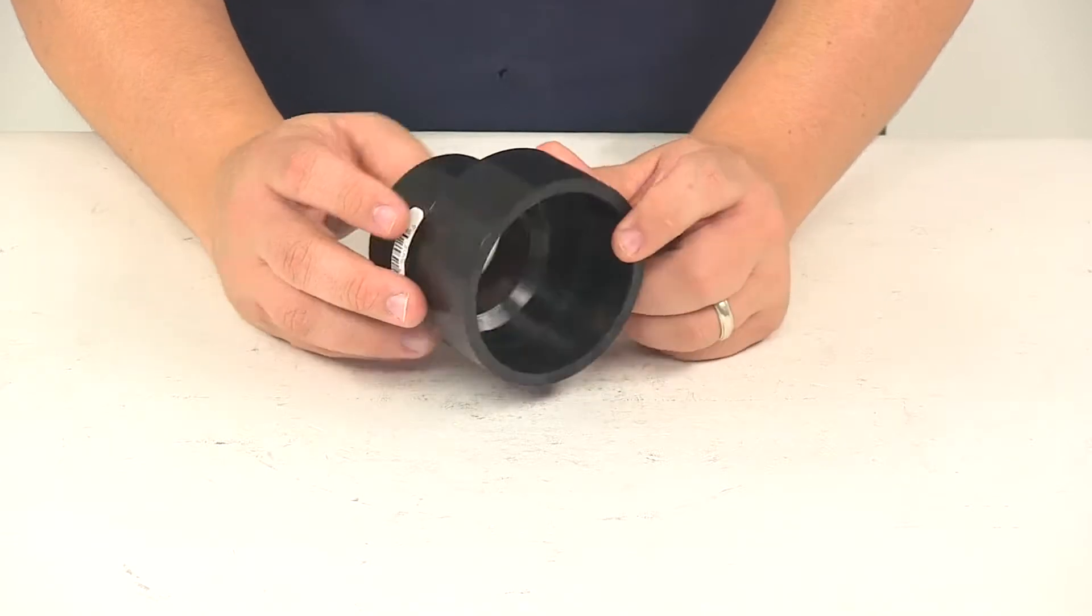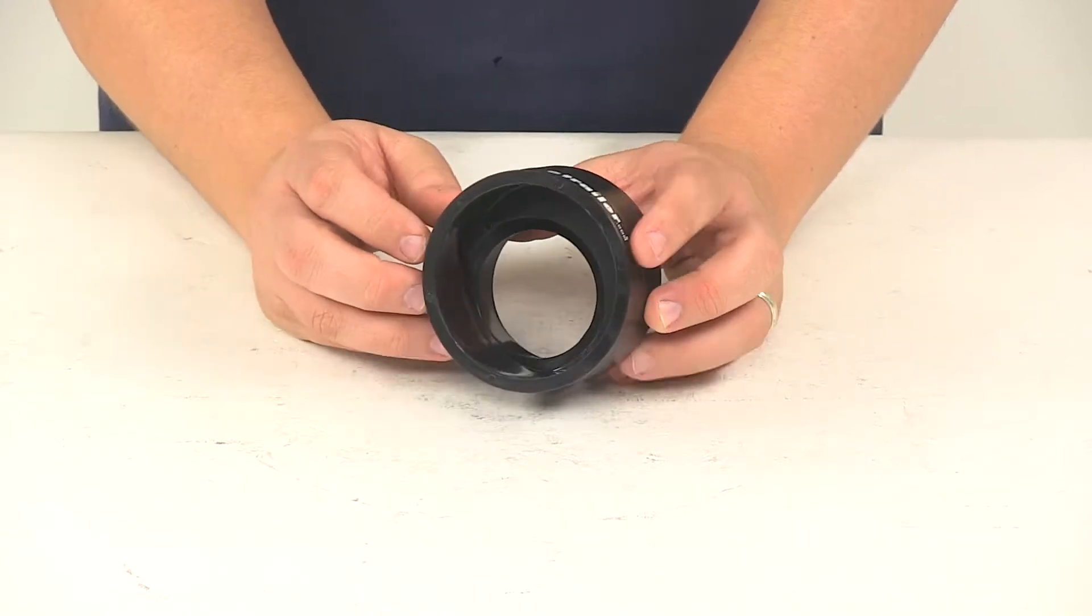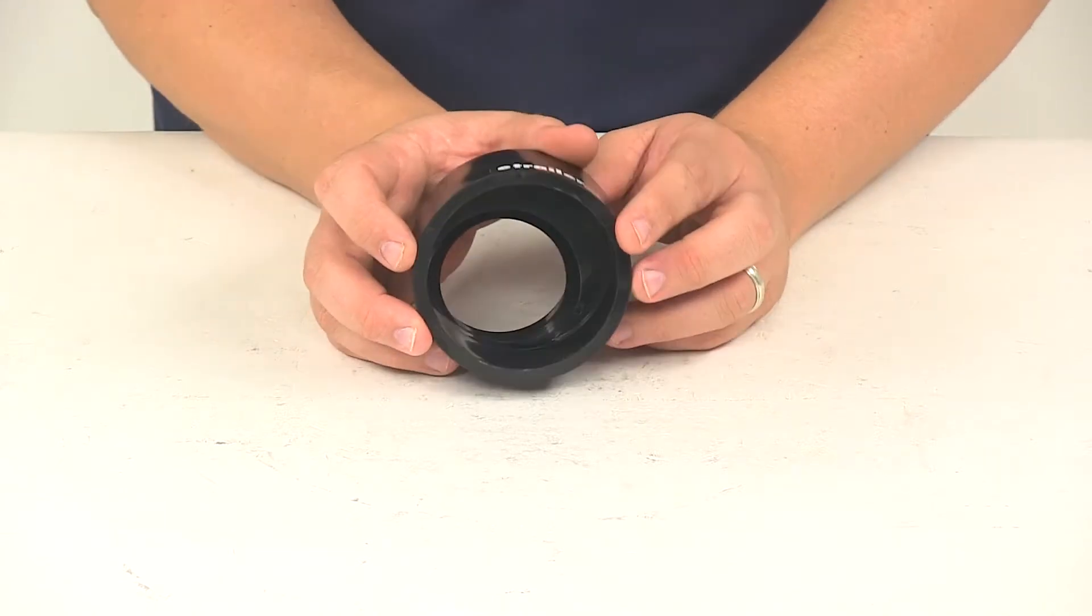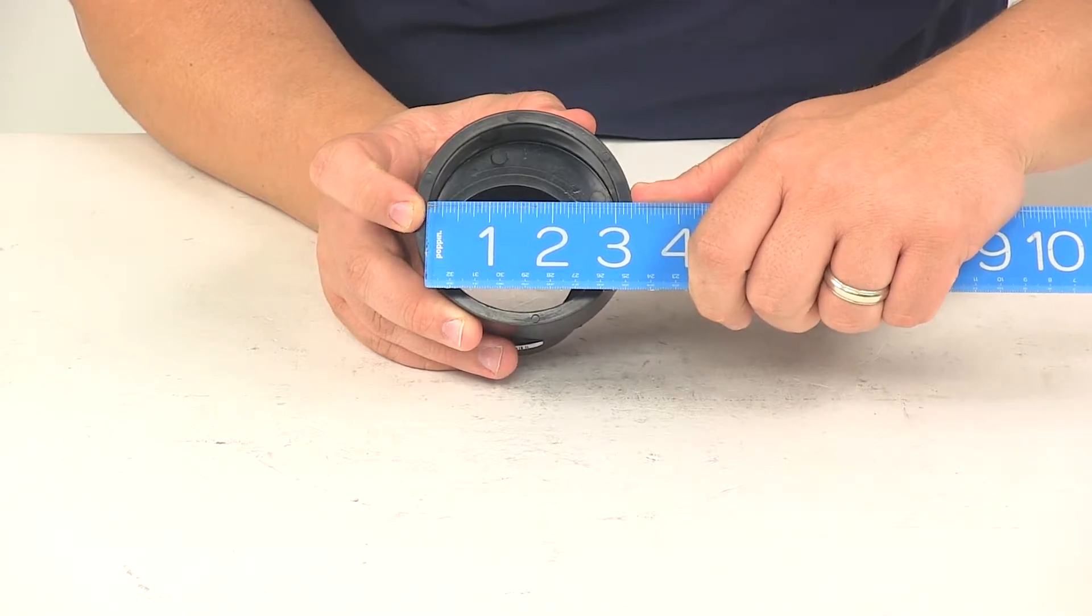It's made from durable black plastic construction. On this end is the three-inch spigot or male end. The inner diameter measures three inches.